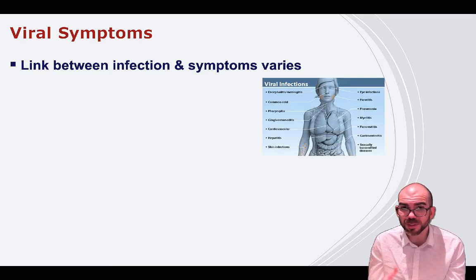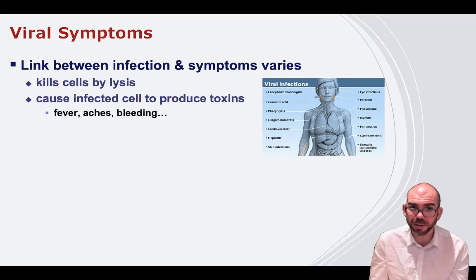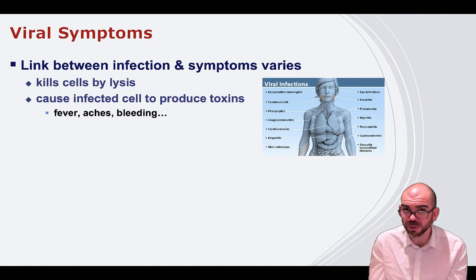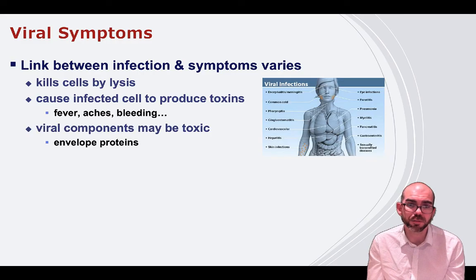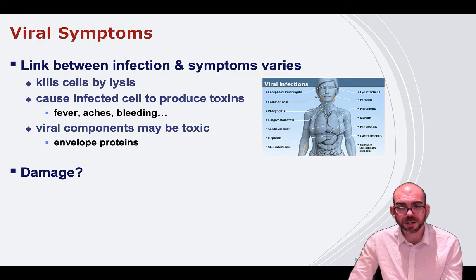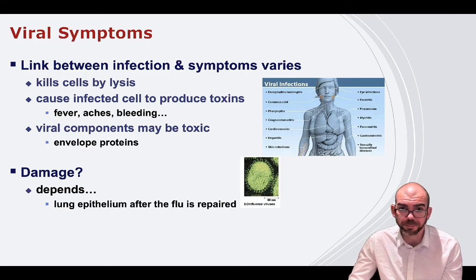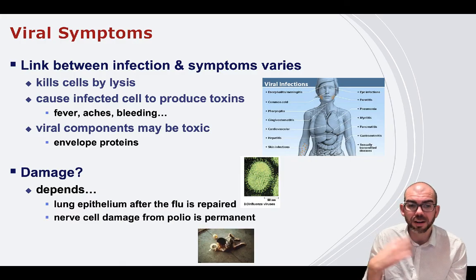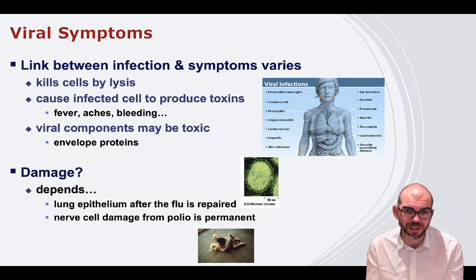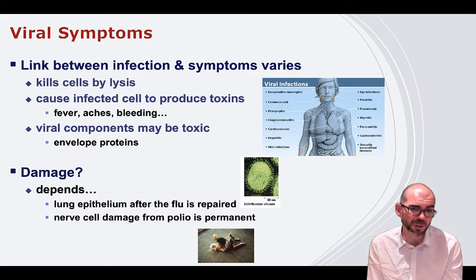If you're infected with a virus, symptoms can vary dramatically based on the type of virus and the health of your immune system. Typically you'll get fever, aching, and potentially some bleeding — that is your body trying to fight off the virus. Some components of the virus itself can be toxic, such as the viral envelope proteins. The damage you experience depends on the virus — influenza damages lung cells that can be repaired, but if a non-reproducible cell like a nerve or heart cell is damaged, as with polio affecting the nervous system, that damage is permanent.